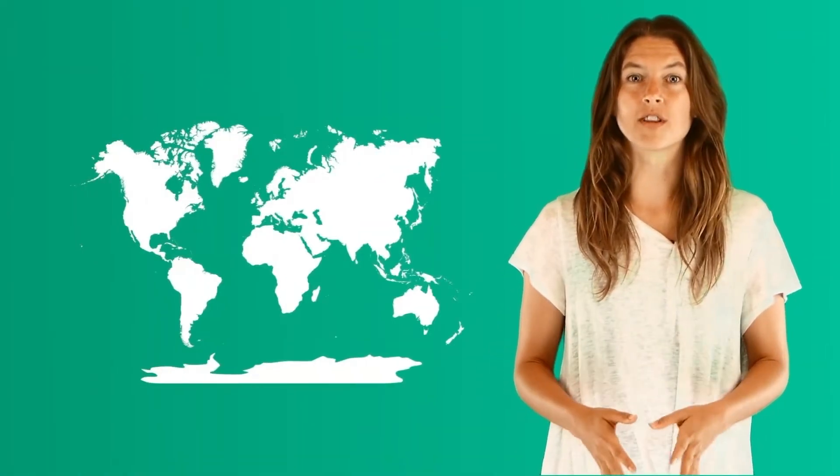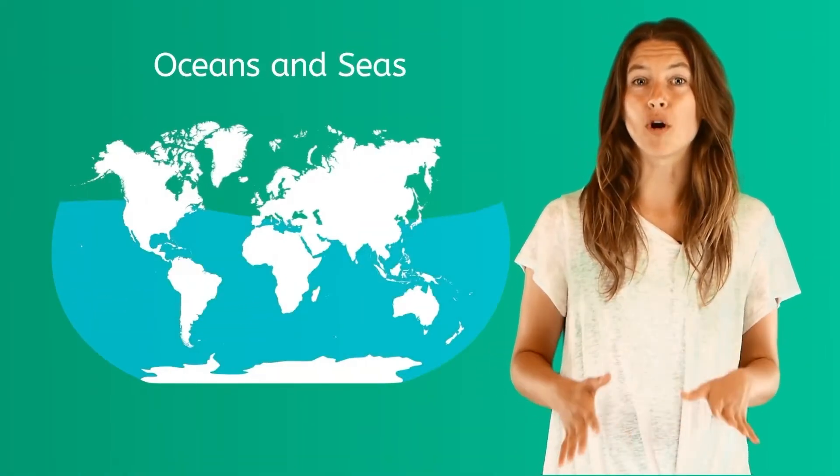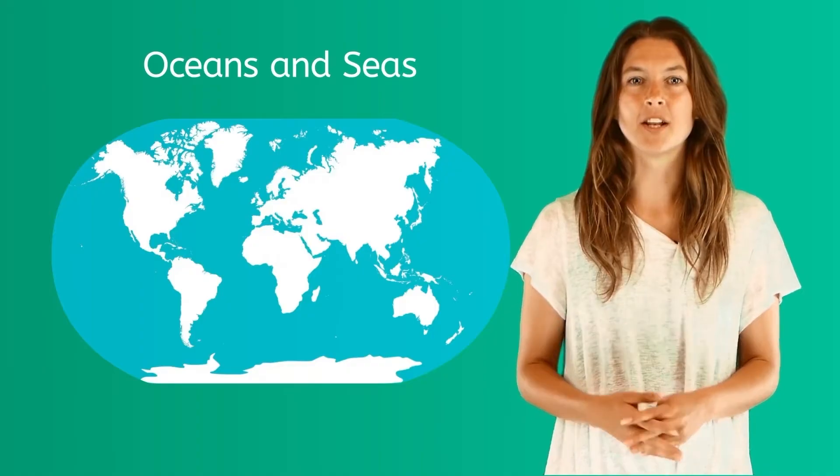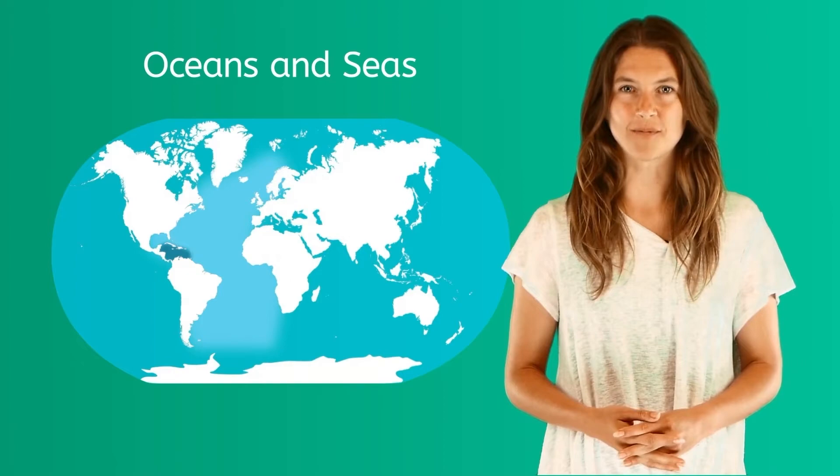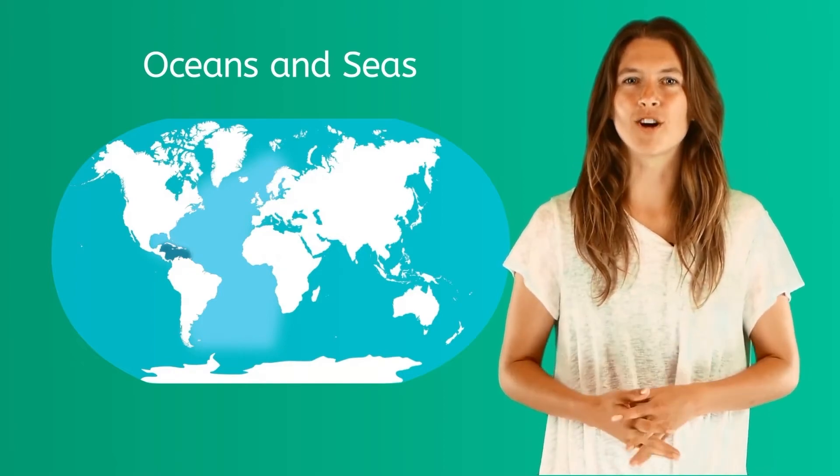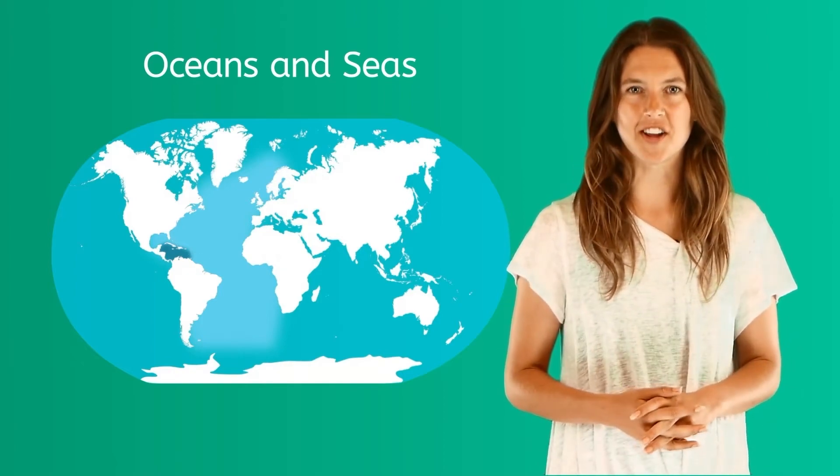Almost three-fourths of the Earth's surface is covered by oceans and seas. An ocean is a large body of salt water and a sea is smaller than the ocean. Most of the oceans and seas are connected to each other.